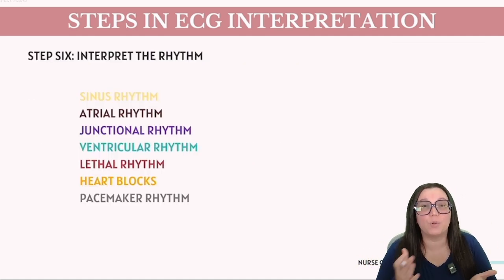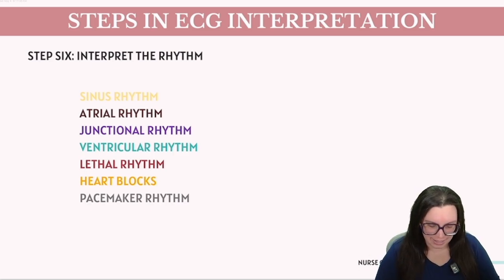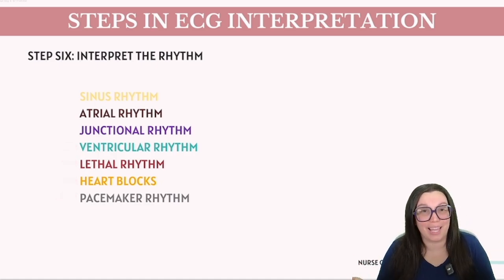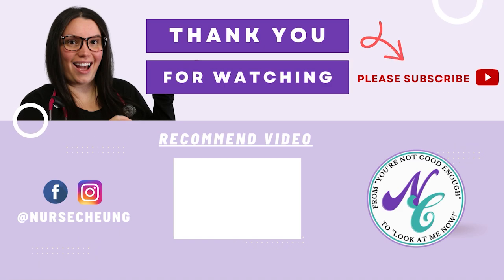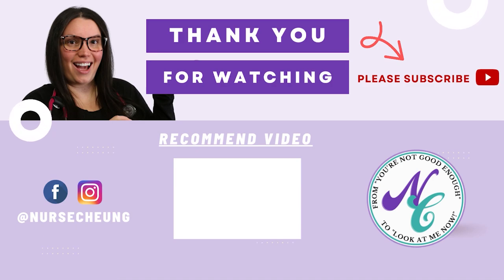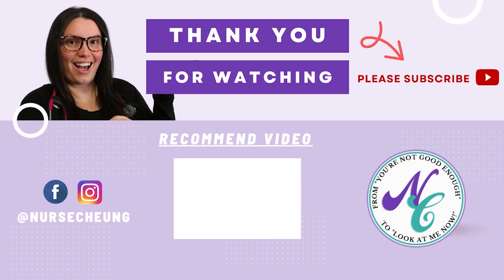Our final step, step six, is to interpret the rhythm. We could be looking at a sinus rhythm, atrial rhythm, junctional rhythm, ventricular rhythm, lethal rhythm, heart blocks, or a patient with a pacemaker. Stay tuned — more videos are coming to help you identify those individual rhythms. I hope this video is helpful in understanding how to interpret ECG rhythms. Head over to nursechunkstore.com for additional resources to help you ace these ECG rhythms, and I'll catch you in the next video!